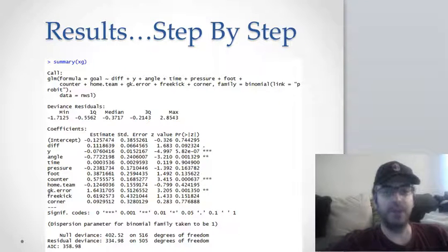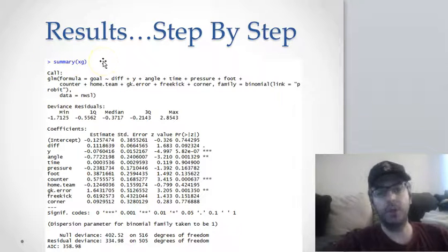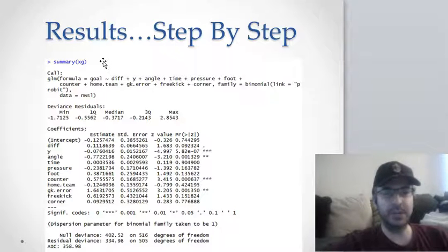So I ran my results, ran my data, went into R, ran it, stored it as an object called XG, and just did a summary of XG. I'll post the R script at some point. I'll post at least partial data. I don't post all my NWSL data just because I haven't done everything with it yet, so I don't want to give it away yet, but I'll probably post a partial data set at least, so if you want to play with this you can.